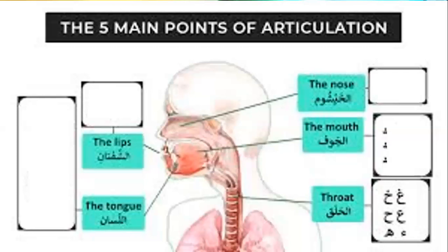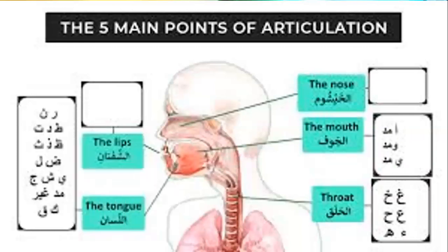Al-Jawf is the place for the Madd letters: Madd with Aleph, Madd with Wow, Madd with Yaa. The tongue is the place for 18 letters — letters like Shin, Ta, Ra, and many others. Ash-Shafatan (the lips) is the place for four letters: Ba, Mim, Fa, and Wow. To know the makharaj of Ba, repeat after me: 'Ab' — the sound comes from the lips. Al-Khayshum (the nose) is the place for Noon Mushaddad and Meem Mushaddad.